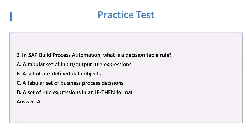Question 3: In SAP Build Process Automation, what is a Decision Table Rule? A. A Tabular Set of Input/Output Rule Expressions. B. A Set of Predefined Data Objects. C. A Tabular Set of Business Process Decisions. D. A Set of Rule Expressions in an If-Then Format. Answer: A.